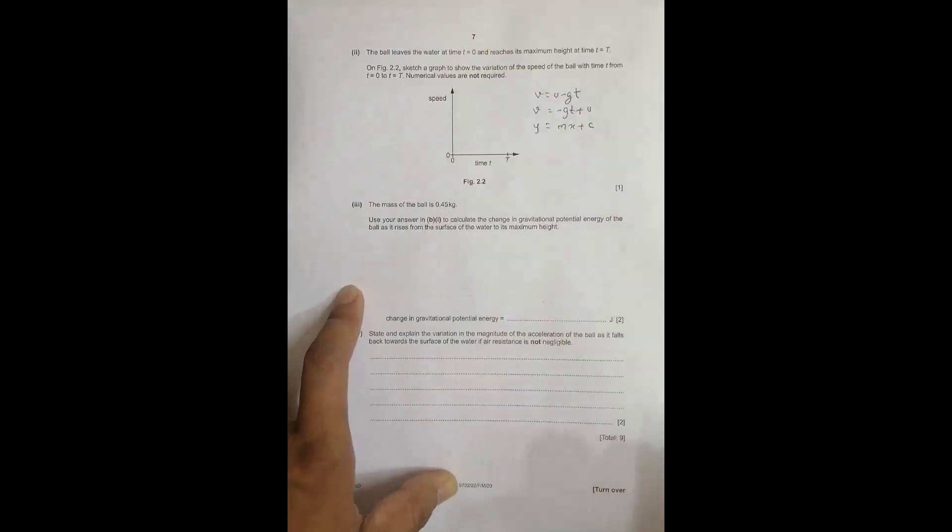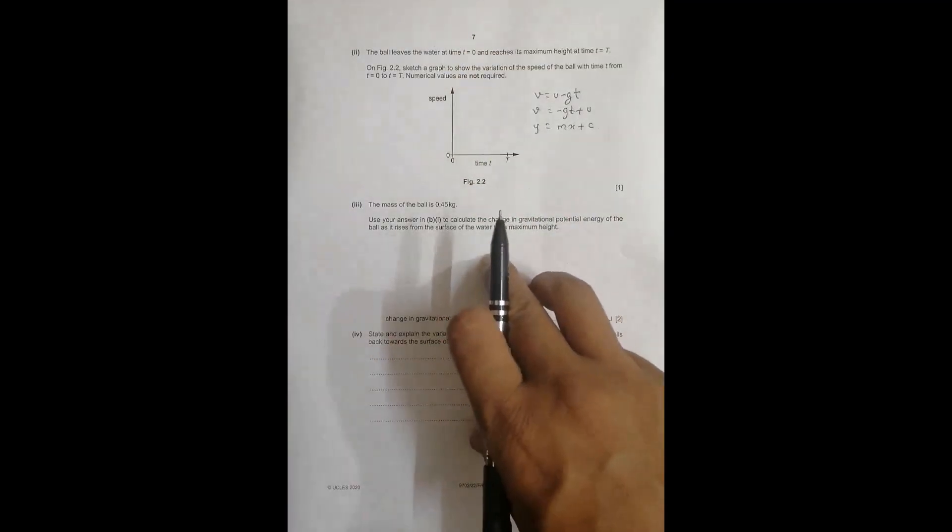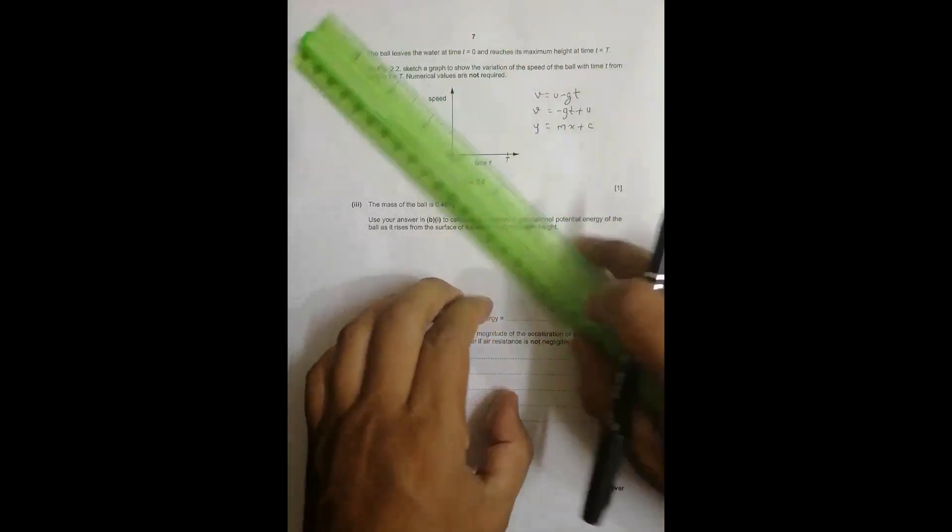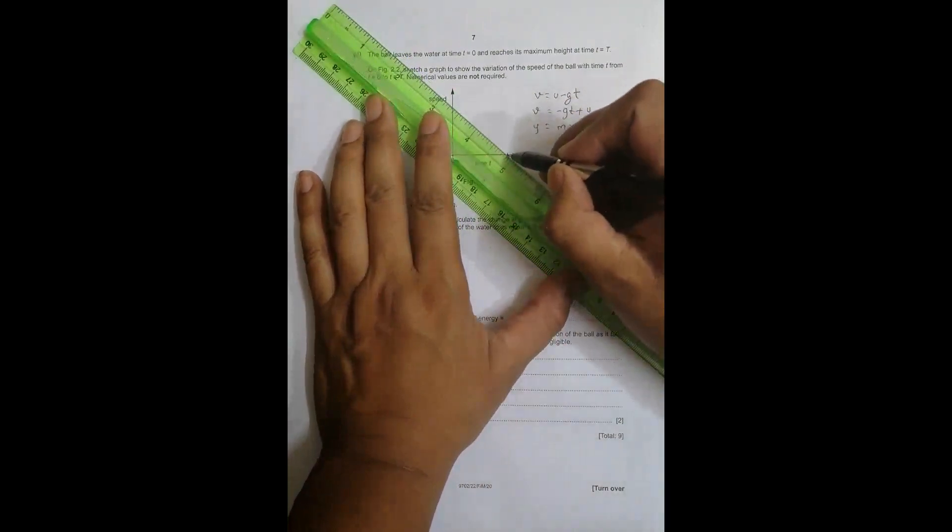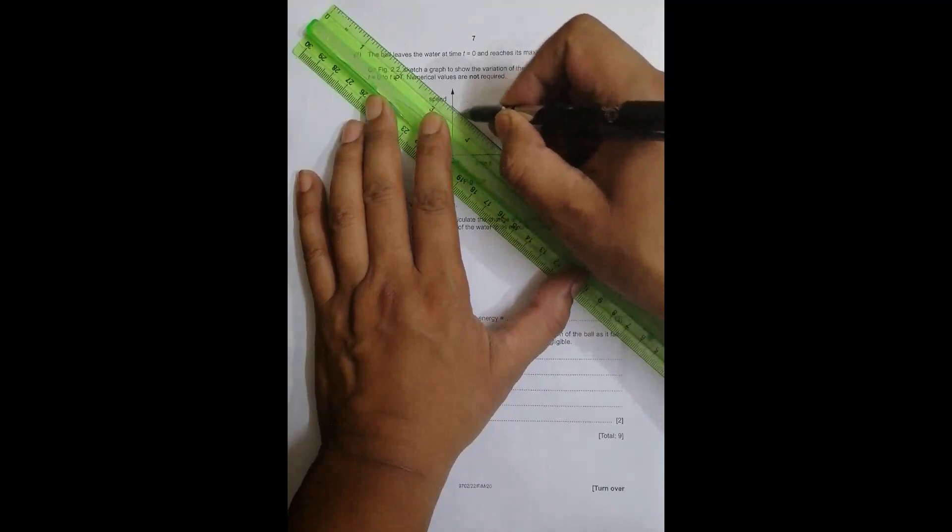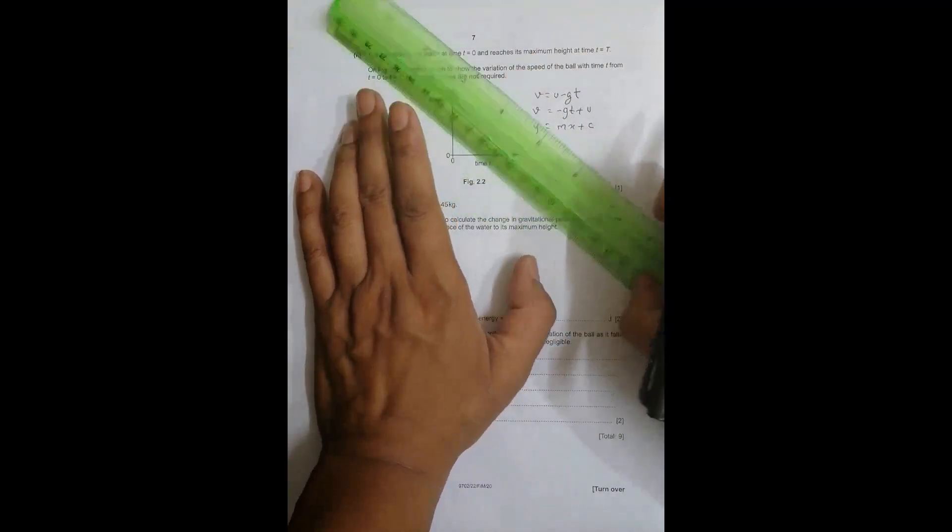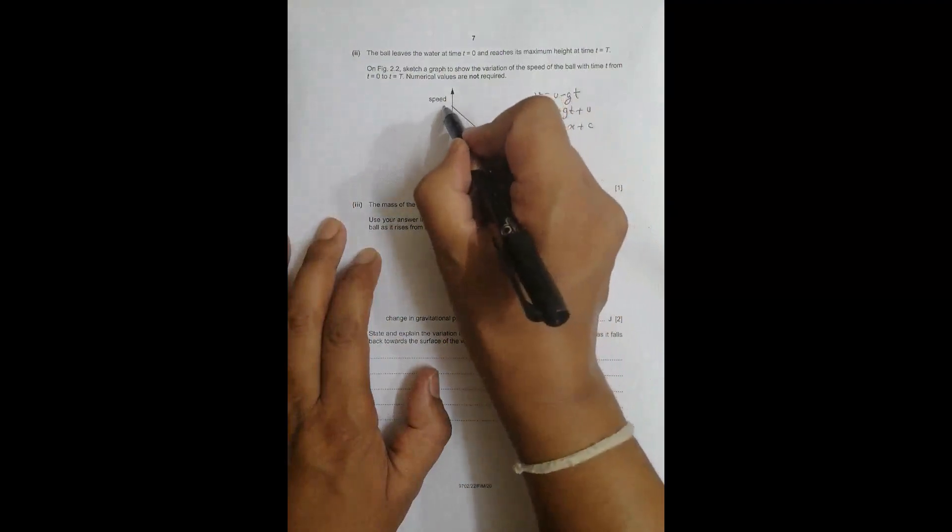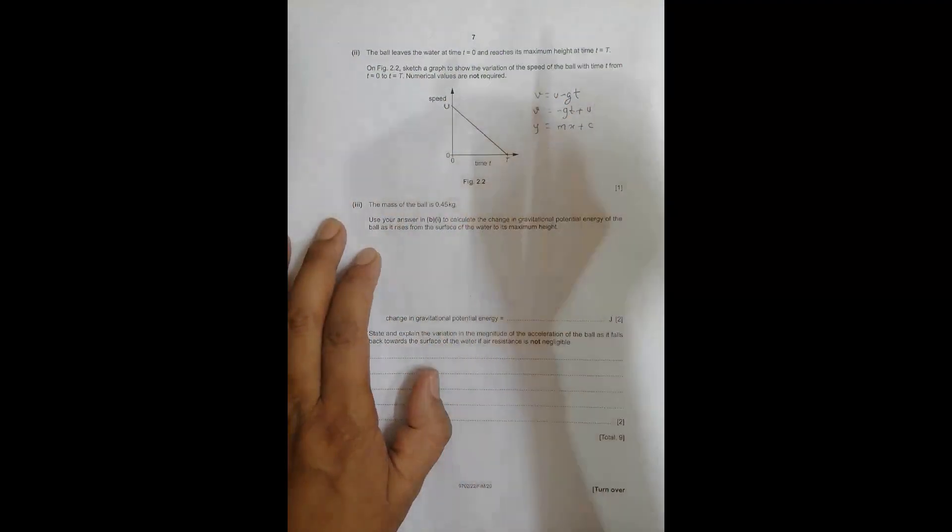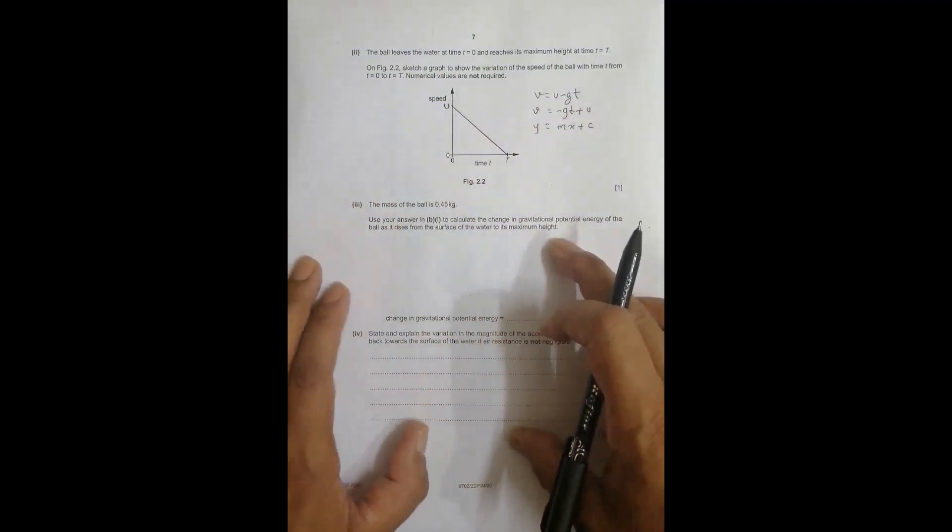The graph should be a straight line from the top. I have a scale here today, so I'll use it to draw the line. Since we're not concerned with values, the initial speed can be any value. It should be a straight line like this coming down to T. This initial value equals u, the intercept.